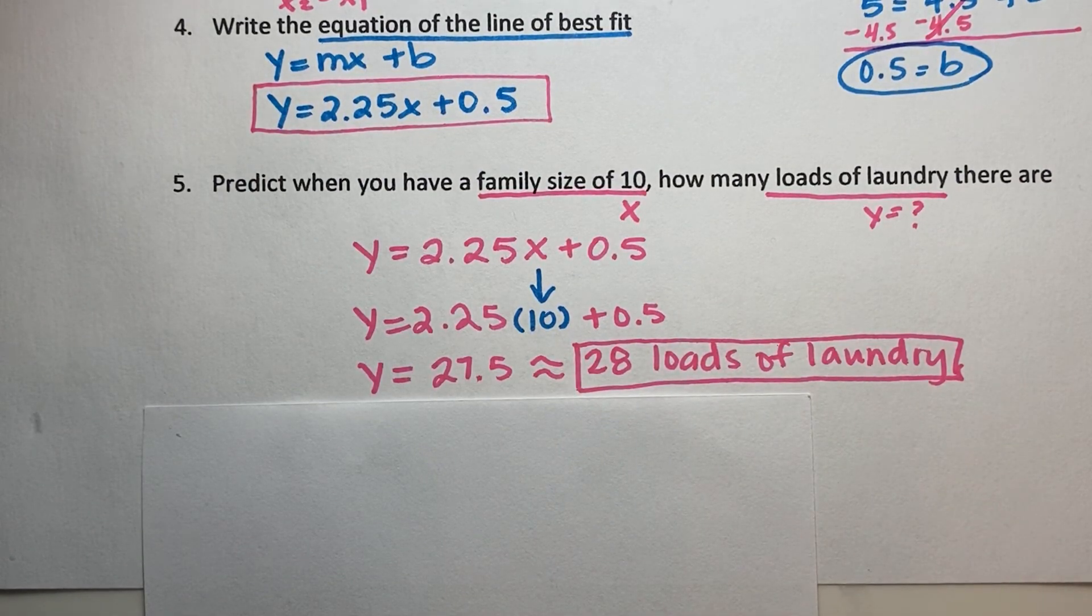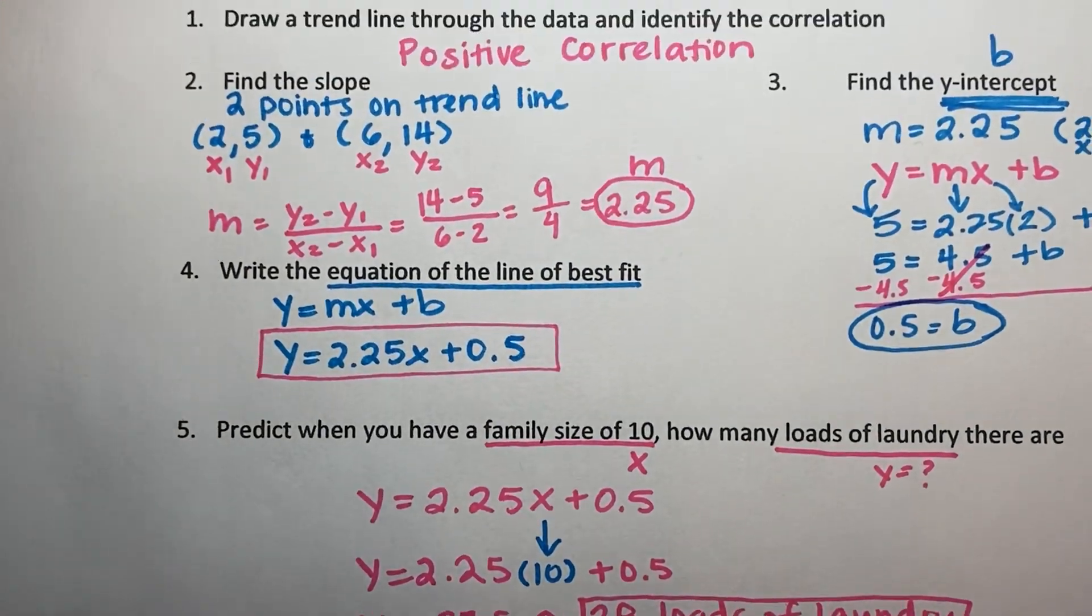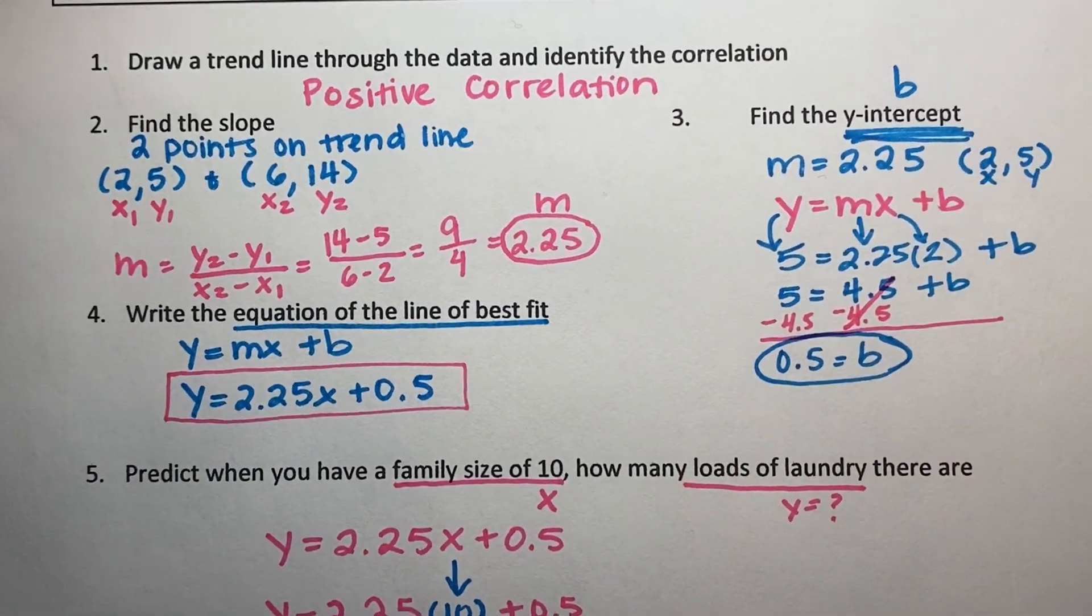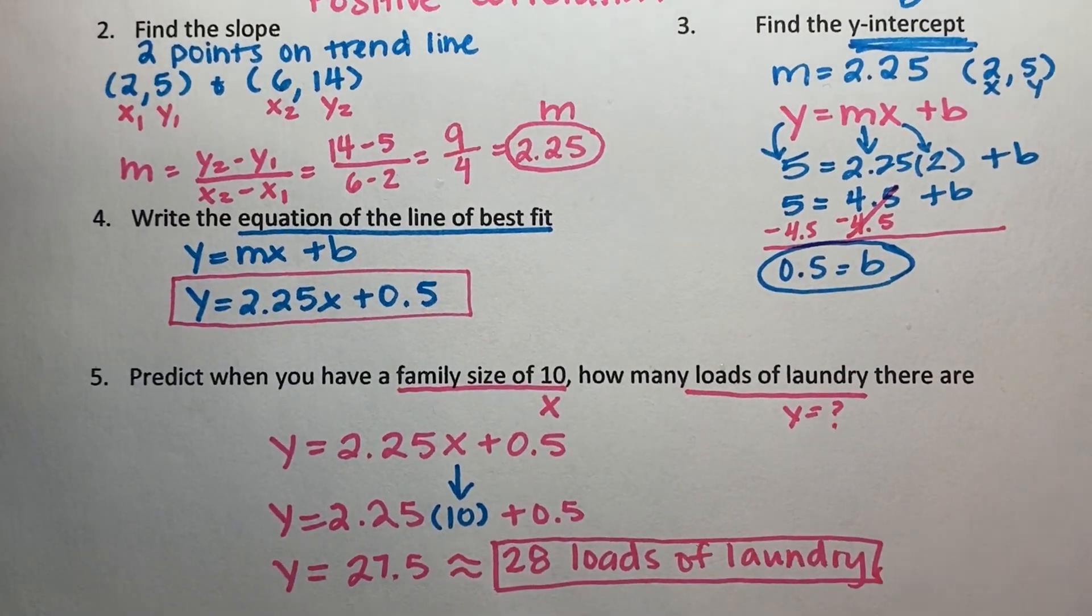So we drew our trend line, identified the correlation, found 2 points on our trend line to indicate the slope. And then we went ahead and plugged it into slope intercept form to solve for b. From there, we can use that line to make a prediction. Now you're going to try on your own.